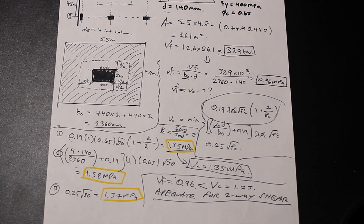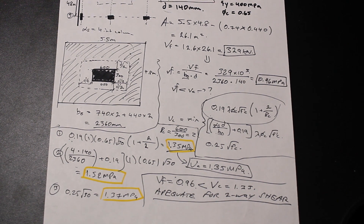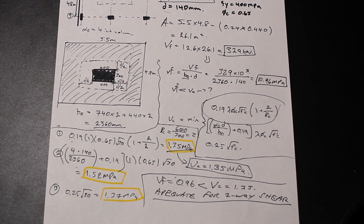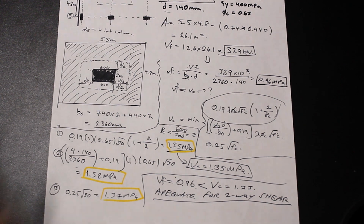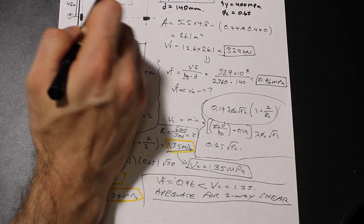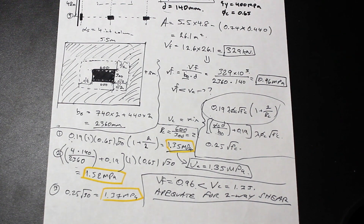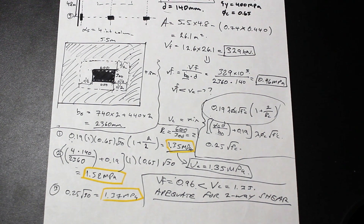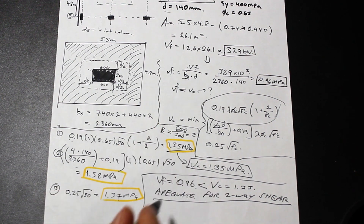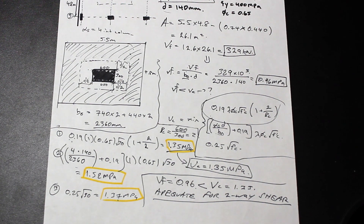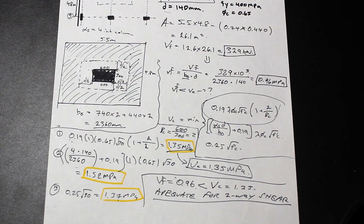What we didn't consider here is the shear stress created by the transfer of unbalanced moments. In two-way slabs there are typically different moments on both sides, creating an uneven stress distribution that would be added to vf — but in this case we just did the three basic checks and compared to vc. Thanks for watching. If you want to see more on shear and the Canadian code, let me know in the comments, hit like and subscribe.